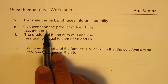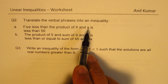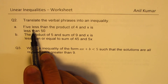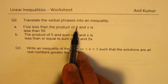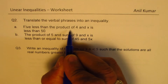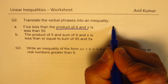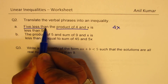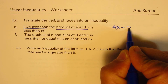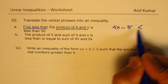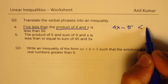The first verbal phrase: 5 less than the product of 4 and x is less than 50. The product of 4 and x is 4x, and 5 less than that means minus 5, so the inequality becomes 4x minus 5 is less than 50.